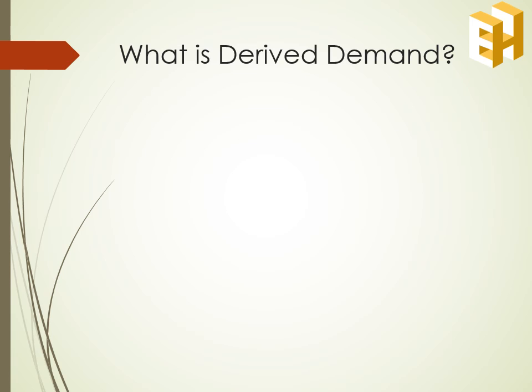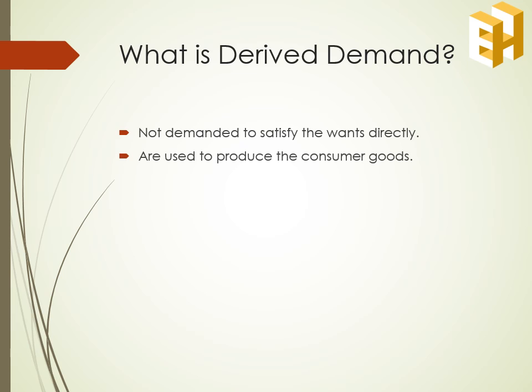Lastly, we have the concept of derived demand. These are goods which are not demanded to satisfy wants directly — they are used in the production process of consumer goods. The most common example of derived demand is the demand for labor.